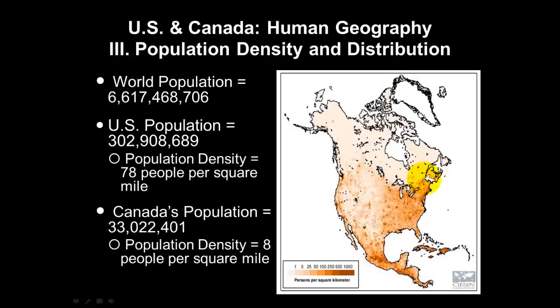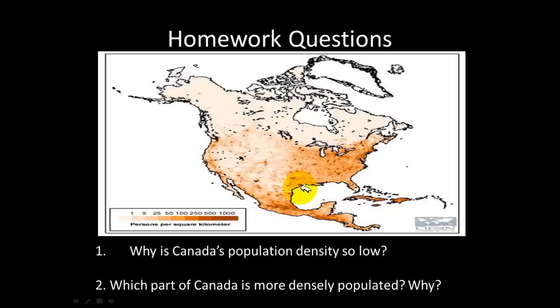The largest population distributions of Canada are right along the United States border. So the majority of the Canadian population lives close to the United States border.